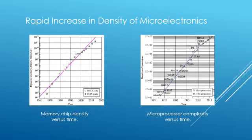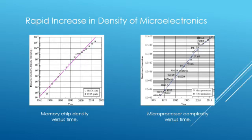With the reduction in transistor size, there is a rapid increase in the density of microelectronics. From the first graph, the number of components on a single chip in 1960 was 10, increasing to 100 in 1970, around 10^7 transistors in 1985, 10^9 components in 2000, and 10^12 components in 2015. This increasing trend follows Moore's law. Due to this increase, the chip area reduces, which reduces power consumption and delay, and enhances speed and noise immunity of the device.